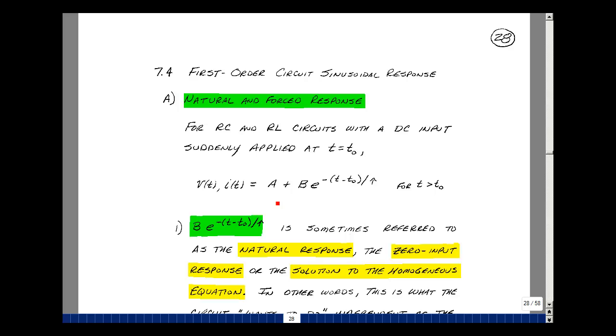The term A here is sometimes referred to as the forced response or the steady-state response. In other words, the DC input produces a DC output eventually. Then lastly, this whole equation together is sometimes referred to as the transient response.